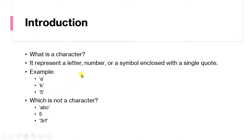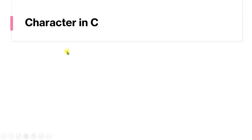Now, how do we store a character in memory? There will be problems where we need to store a character inside memory, so we should understand what C programming provides for that. To represent or store a character in memory, C programming provides a keyword called char — spelled C-H-A-R — which is used to declare a variable where we can store a character.